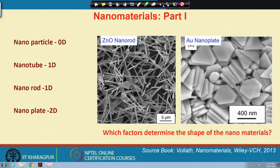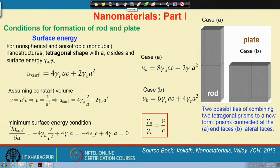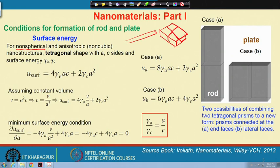At the very beginning, I would like to say that nanomaterials have a higher amount of surface area. So whatever energy you consider in terms of thermodynamics, one should include the surface energy term in the total energy. If we consider a non-spherical particle — for example, a rod in one case and a plate in another — these are definitely non-spherical particles, and the unit cell can be thought of as a tetragonal shape.